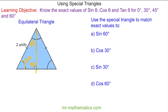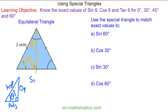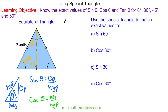We need to remember how to work out the sine and cosine of an angle. If we label the angle theta, we identify the opposite side, the adjacent side, and the hypotenuse — remembering that the hypotenuse is always opposite the right angle. The sine of angle theta is the opposite divided by the hypotenuse, and the cosine of theta is the adjacent divided by the hypotenuse.